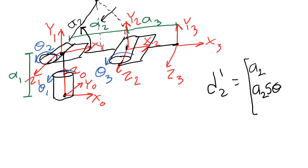The sine of theta 2 gives the opposite side, which is the y displacement. So for the y part of this displacement, we write a2 times the sine of theta 2. For the x component, we write a2 cosine of theta 2. As theta 2 changes, the z component of the displacement does not change at all. The centers of these two frames are lined up in the z1 direction, so the z component will be 0.